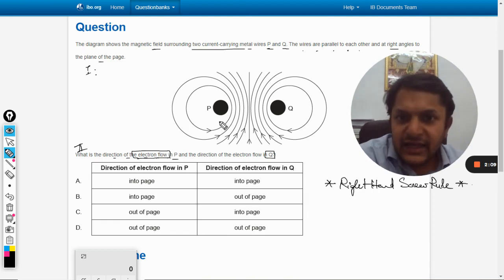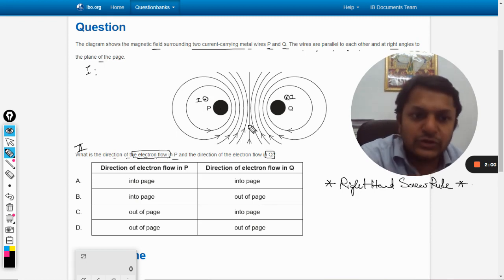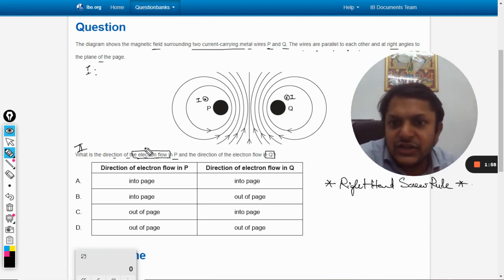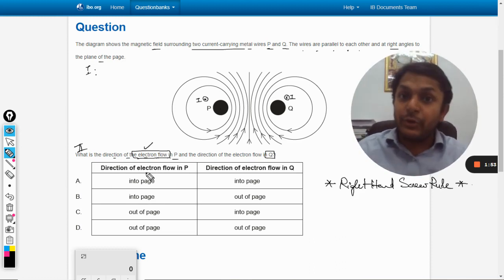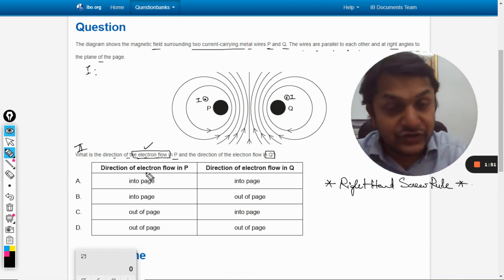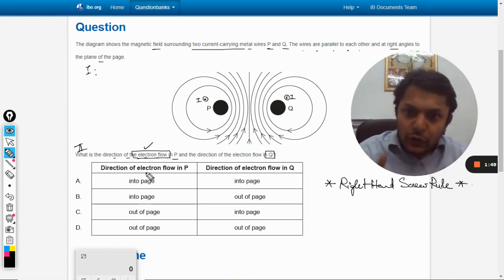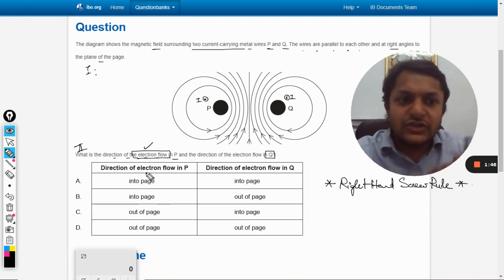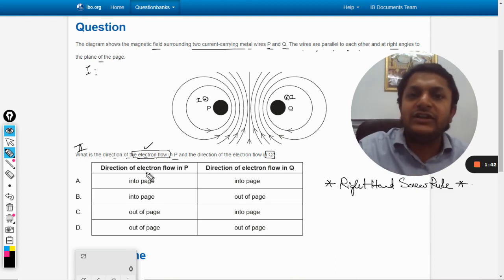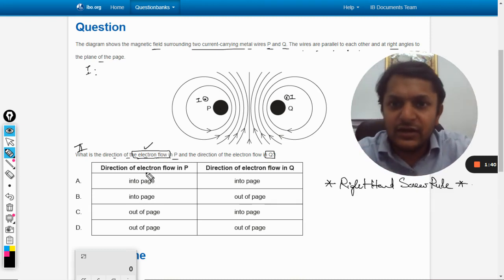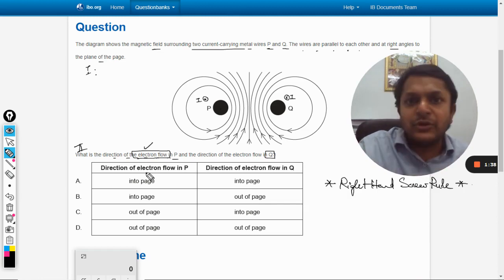So I can say that the current will be coming out of the board. This is the symbol for out of the board, and the current here is into the board. Now they are asking you the direction of the flow of electrons. That is very important. This becomes the second part of the question. The flow of electron is always in the opposite direction. They are talking about the electronic current but we have found the direction of the conventional current. So our answer will be opposite to what I have found.